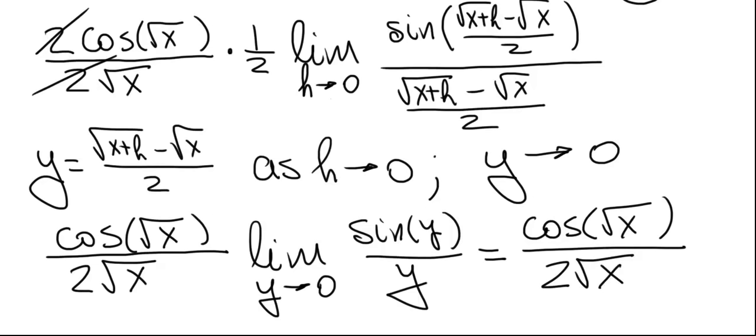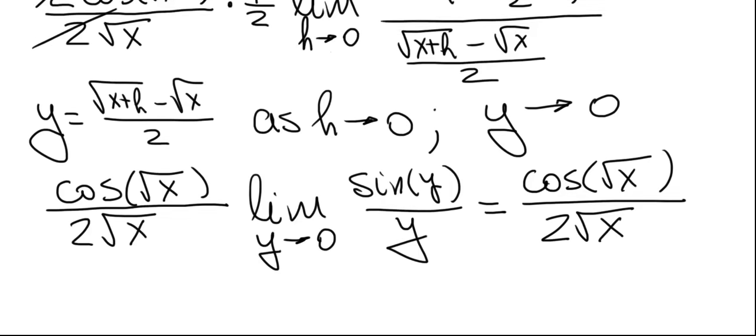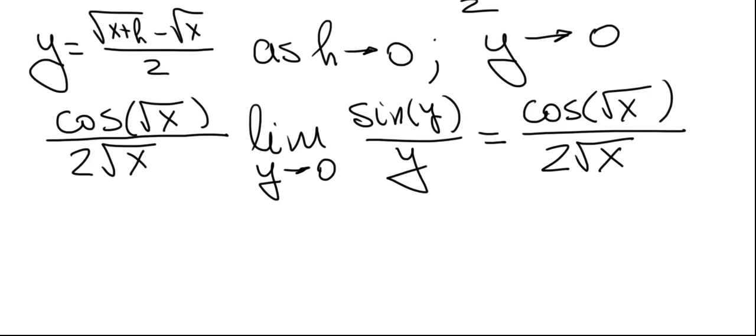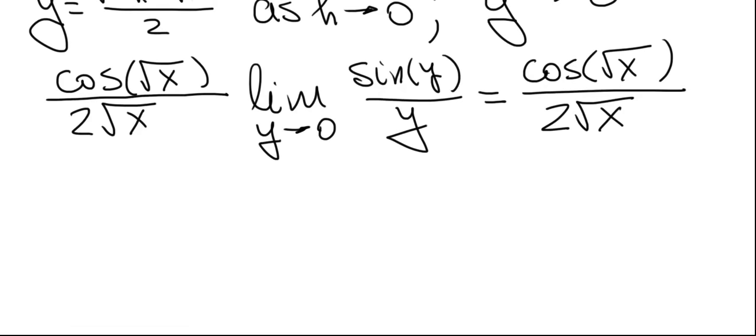So using the definition of the derivative, we found that the derivative of sin(√x) is cos(√x) divided by 2√x.